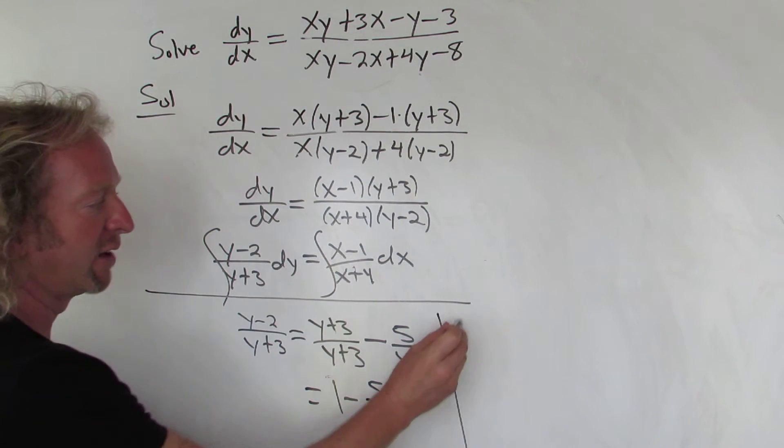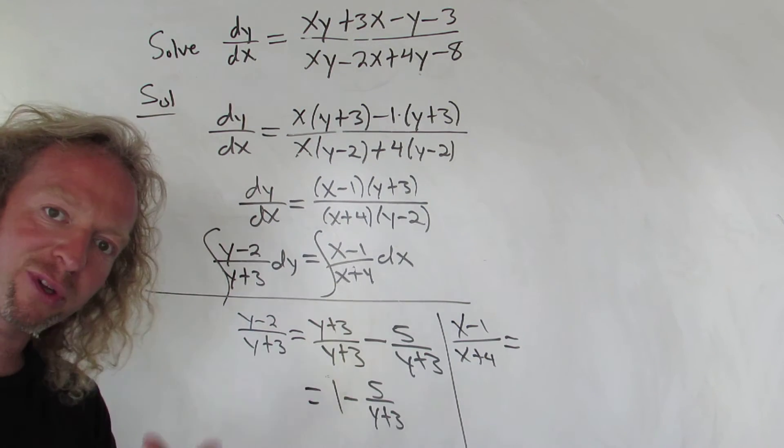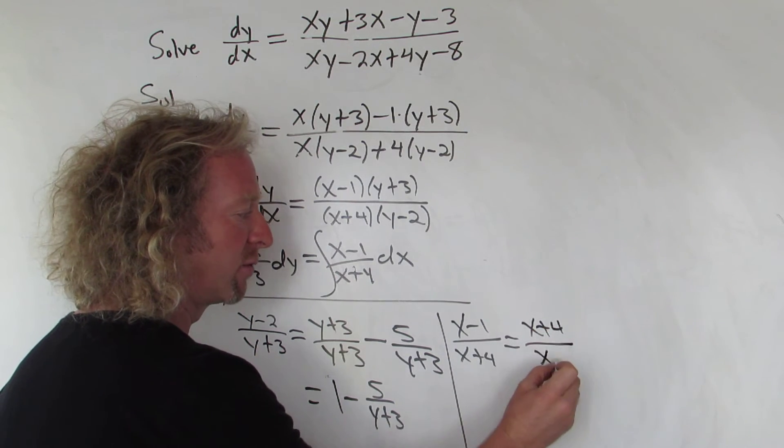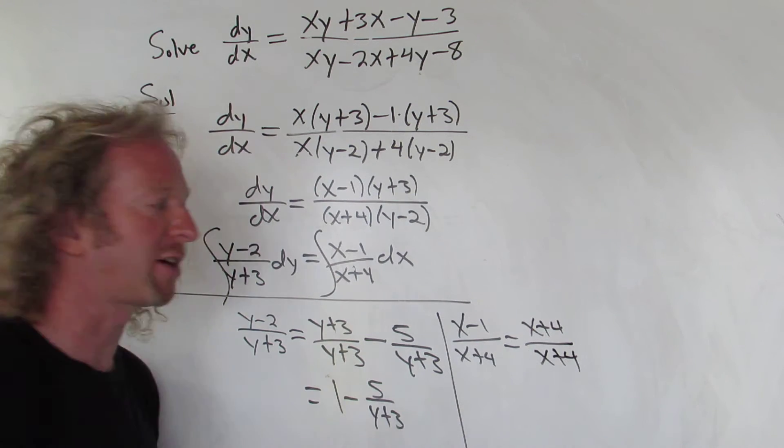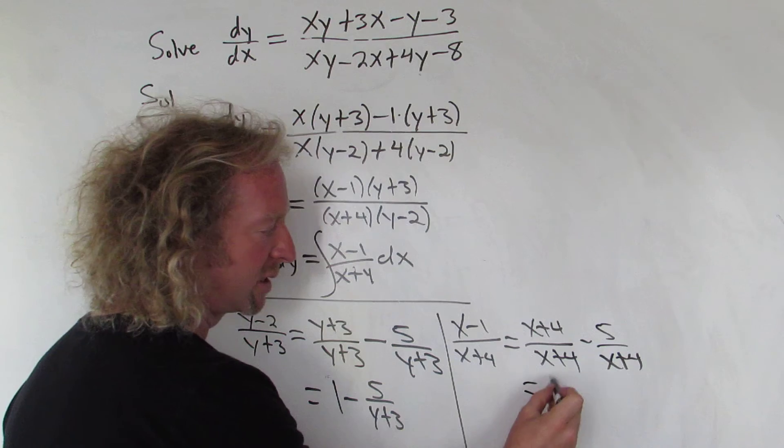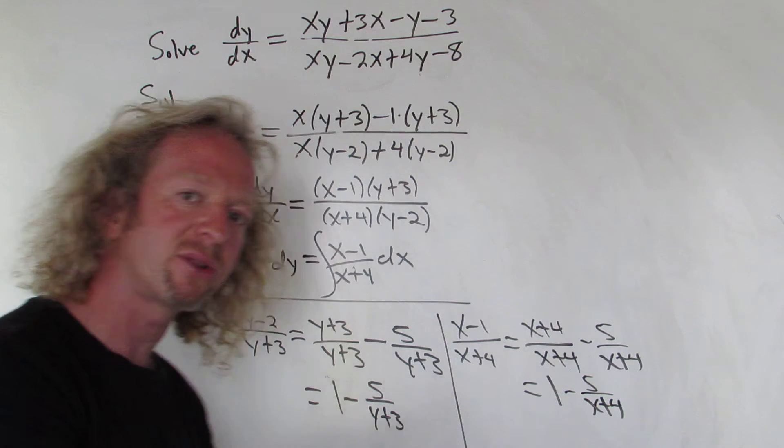You can do the same thing with this one. We have (x-1)/(x+4). We want this to be (x+4)/(x+4), so you just put it there. And how do you get from four to minus one? Same thing, you subtract five. It's really beautiful. So minus 5/(x+4).